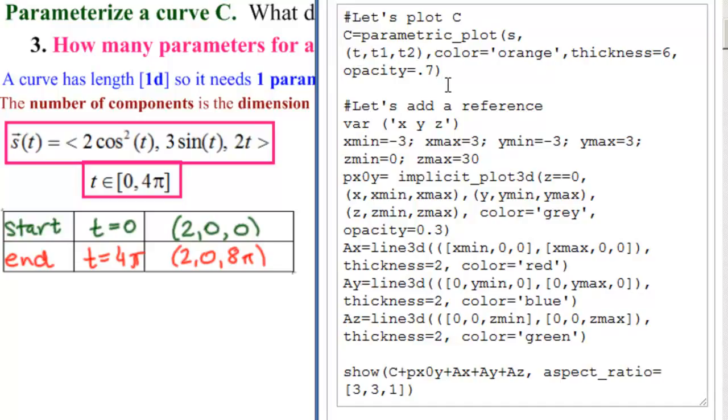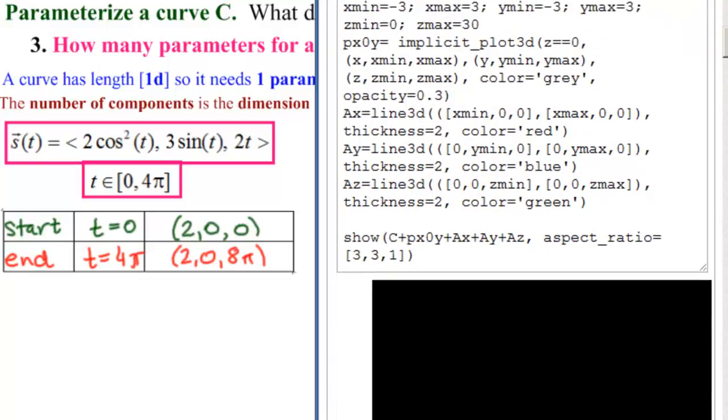And then some fancy things to make it look nice. And I always like to have references, so I'm putting in an X, Y, Z axis. So let's make sure the X axis is red, Y axis is blue, and the Z is green. Let's go see it.